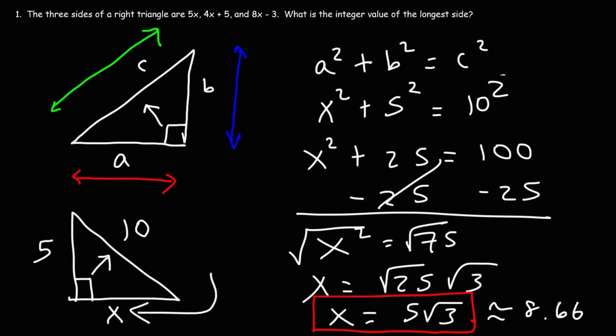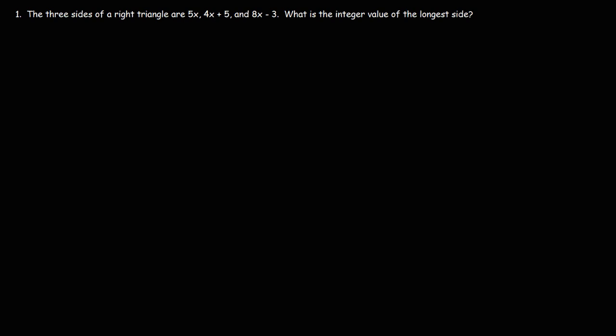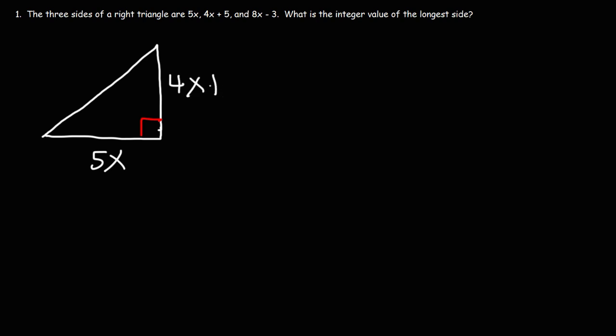Now let's move on to the problem presented at the beginning of this video. The three sides of a right triangle are 5x, 4x plus 5, and 8x minus 3. What is the integer value of the longest side? Let's begin with a picture. The two legs of the right triangle are 5x and 4x plus 5, and the hypotenuse is 8x minus 3.